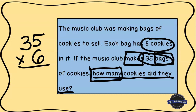Let's find out how many cookies they used. We start in the ones place: six times five is thirty. Put down the zero and regroup that three up to the tens place. Now we multiply six times three — six times three is eighteen. Don't forget the three we regrouped floating above, which represents three extra groups. So eighteen plus three gives us twenty-one.